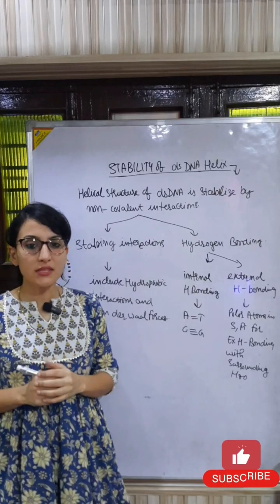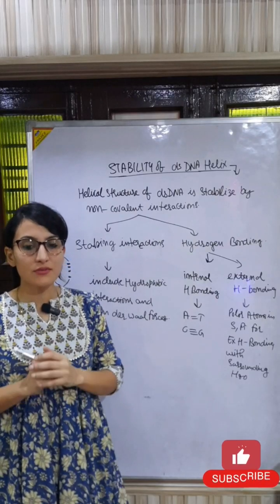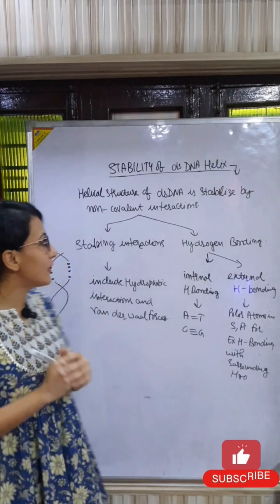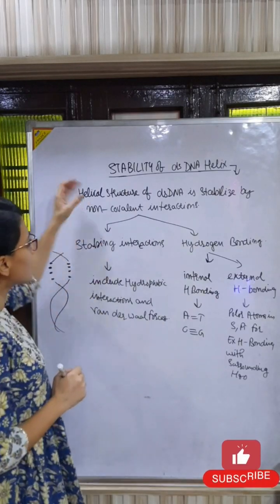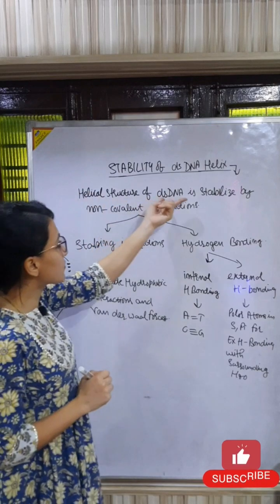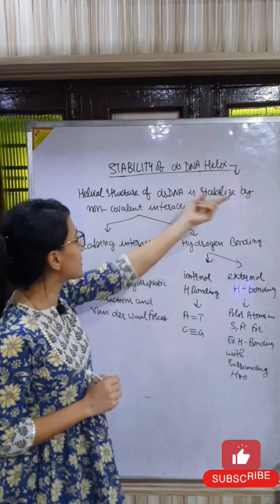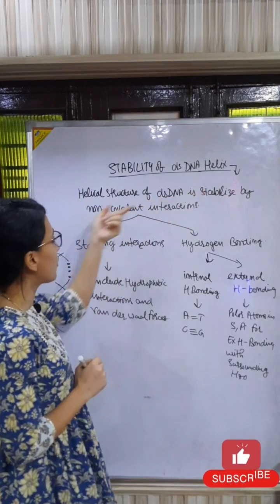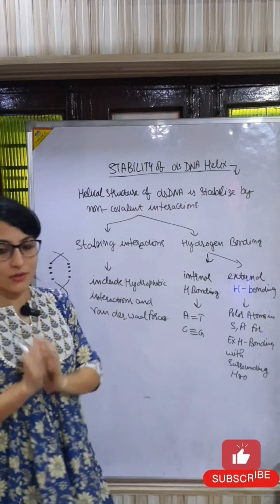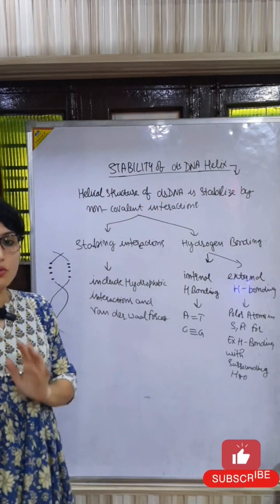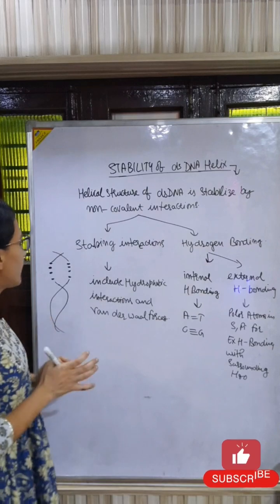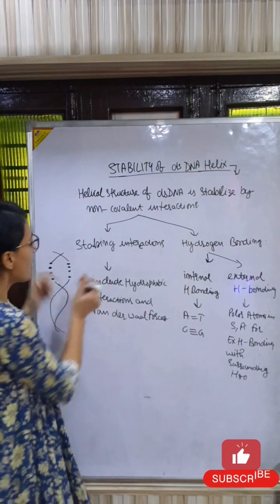Today I am going to discuss about the stability of double-stranded DNA helix. The helical structure of double-stranded DNA is stabilized by non-covalent interactions, and there are two types of non-covalent interactions.